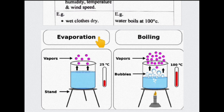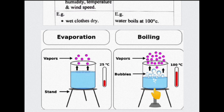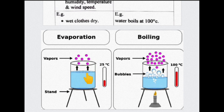To summarize: evaporation can take place at any temperature — for example, at 25 degrees centigrade we have liquid phase surface molecules escaping into gas phase. At the boiling point, every molecule is at 100 degrees centigrade, and the air pressure equals the vapor pressure. Evaporation is a surface phenomenon that takes place at constant temperature. Thank you.